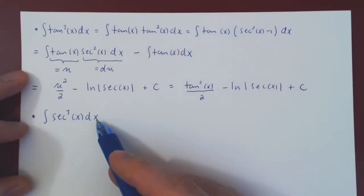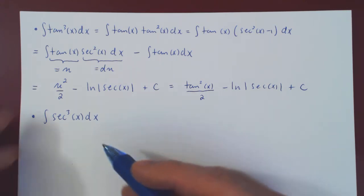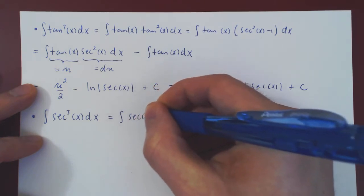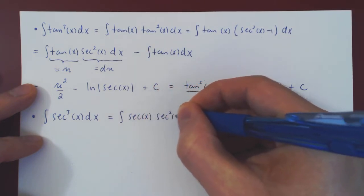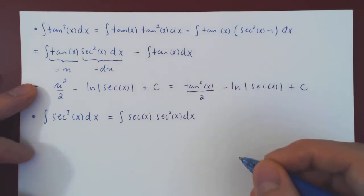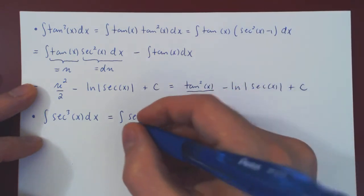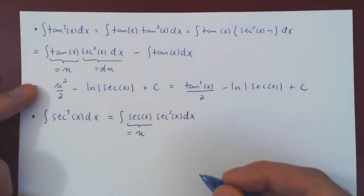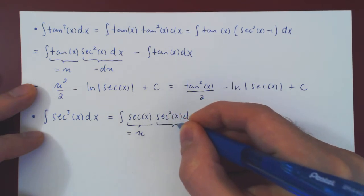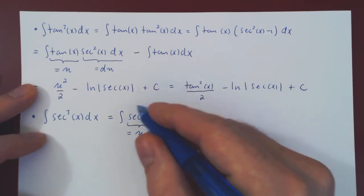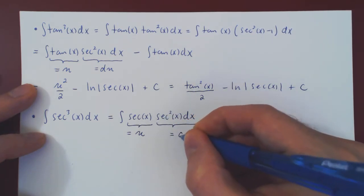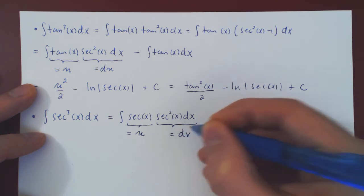The idea here — and this is why this is an exceptional integral — is to break up the secant cubed as secant(x) times secant squared, and now apply integration by parts, where we let u be secant(x). Recall integration by parts: it is the integral of u dv. So once you make your choice of u, everything else, including the dx, must be your dv.